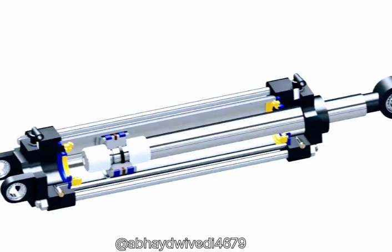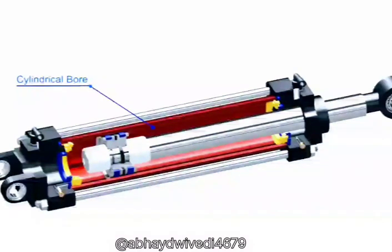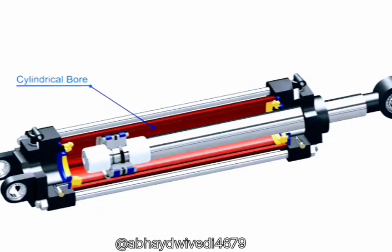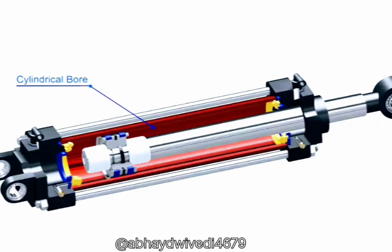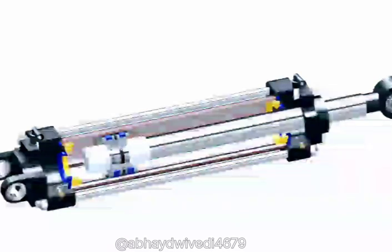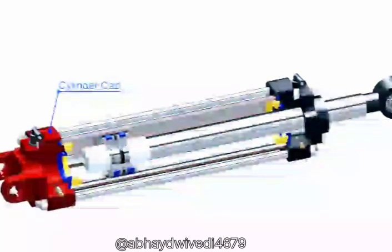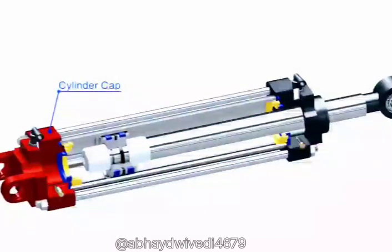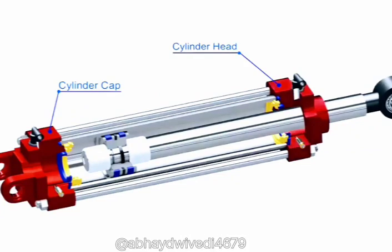This whole assembly then goes into a cylindrical bore. This cylinder is generally made of aluminium or steel. A cylinder cap encloses the cylinder chamber at one end, and the cylinder head encloses the chamber from the other end.